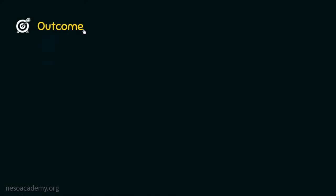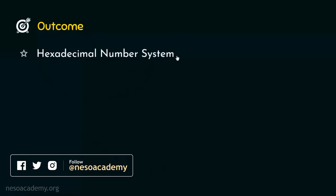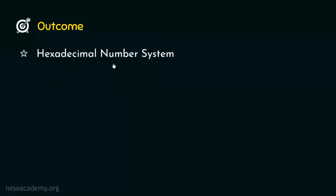Coming to the outcome of today's session, today we will acquire the understanding of the hexadecimal number system in detail. First, we will learn the reason why the number system is called hexadecimal. Then, we will observe its relationship with the binary number system and the reason why and where this number system is used. Thereafter, we will observe how the numbers are formed in this system, and finally, we will understand the general representation of hexadecimal numbers.